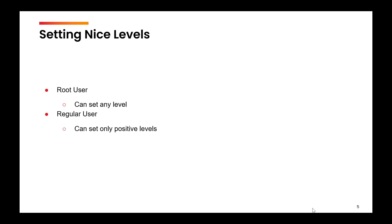The next question is: who can set these nice levels? If every user is given the liberty to set nice levels, everyone will want their process to have the highest priority and will assign minus 20 to all processes, which is not conducive for the system. So nice levels can only be changed by the root user, who can assign any nice level, whereas a regular user can only set positive nice levels and cannot lower below the default.